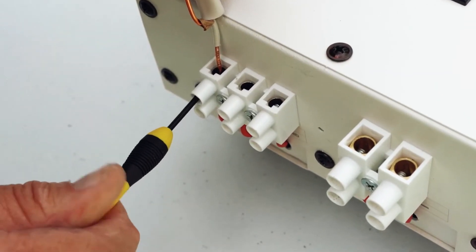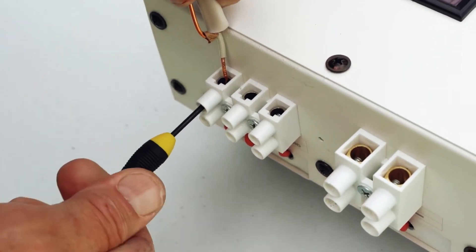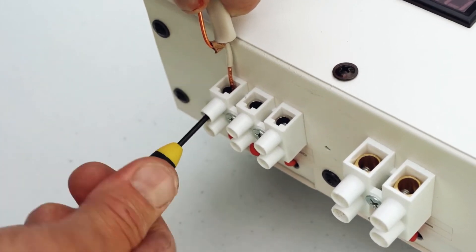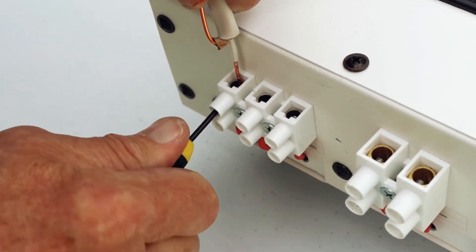Connect the other end of the wiring to the controller. You will need a small Phillips head screwdriver. Insert the wire, then tighten the screw. Do this for the remaining two connections.